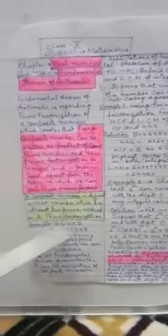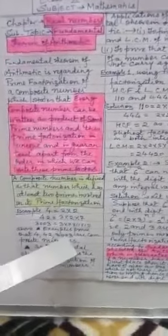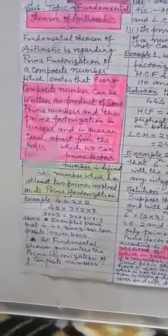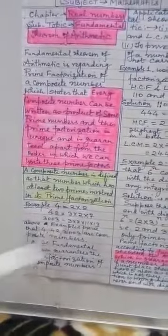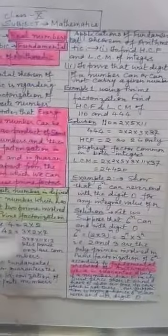For example, 4 is 2 into 2, 42 is 3 into 2 into 7, 3003 is 3 into 7 into 11 into 13. So from above examples, we clearly see that 4, 42, 3003 are composite numbers involved in the prime factorization and this is what fundamental theorem guarantees. So fundamental theorem guarantees the prime factorization of composite numbers as done above.